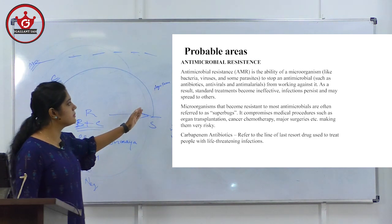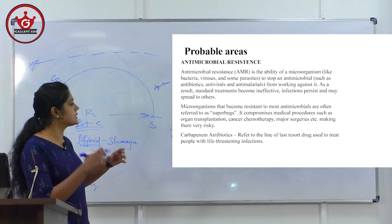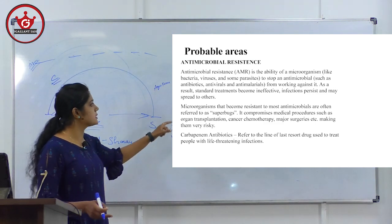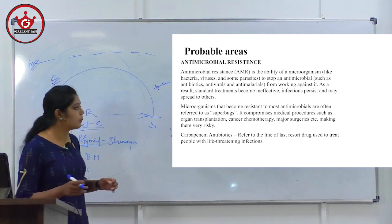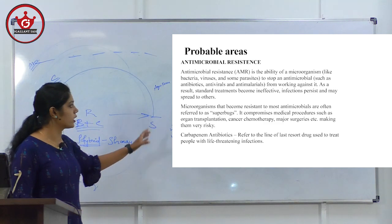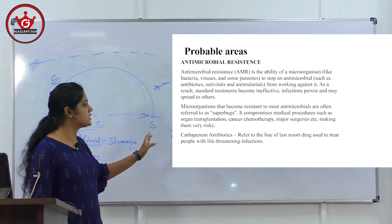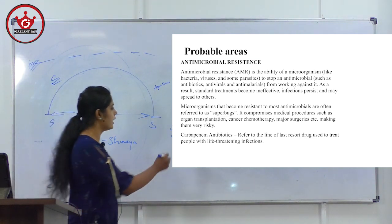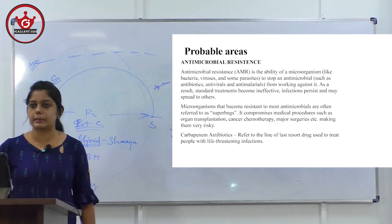Antimicrobial resistance is the ability of a microorganism to stop an antimicrobial from working against it. As a result, standard treatments become ineffective, and infections persist and may spread. Microorganisms that become resistant to most antimicrobials are referred to as superbugs. It compromises medical procedures such as organ transplantation and cancer chemotherapy. Carbapenem antibiotics refer to the line of last resort drugs used to treat life-threatening infections.